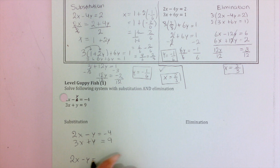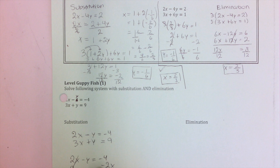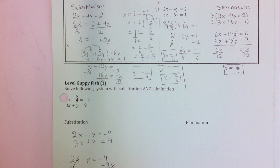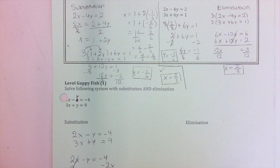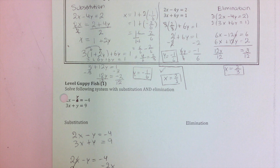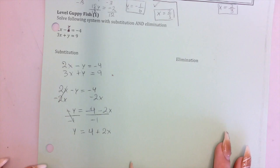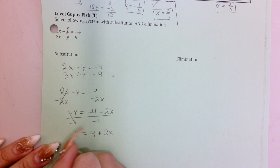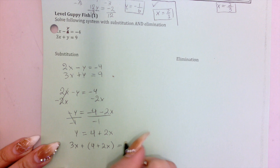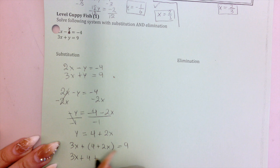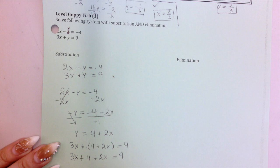I want to solve for y because the coefficient is 1, which is nice. I'll pick the first equation: 2x minus y equals negative 4. Subtracting 2x from both sides gives negative y equals negative 4 minus 2x. Dividing by negative 1: y equals 4 plus 2x. Now I plug this into the second equation: 3x plus (4 plus 2x) equals 9. Since I'm adding I can drop the parentheses. Combining like terms: 5x plus 4 equals 9.